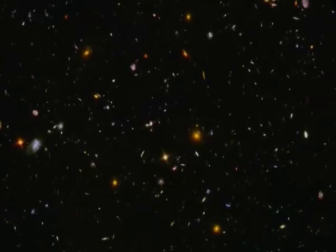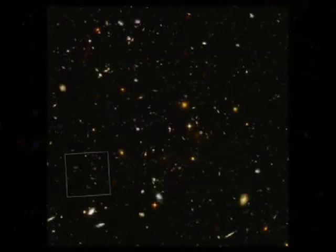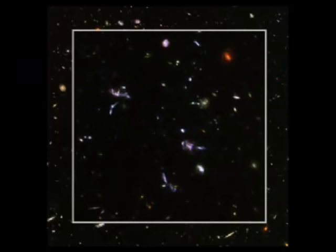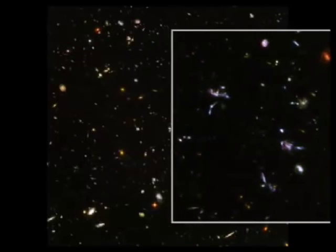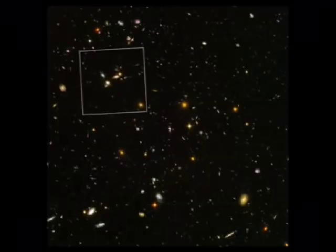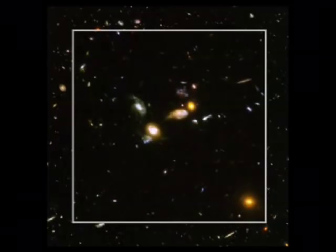This is called the Ultra Deep Field. It represents the farthest we've ever seen into the universe. Over 10,000 galaxies are in this picture. Every single dot, smudge and smear is an entire galaxy. And each one of these dots has millions and millions of stars. Each star has the possibility of planets orbiting it. Each one with the possibility of a civilization.